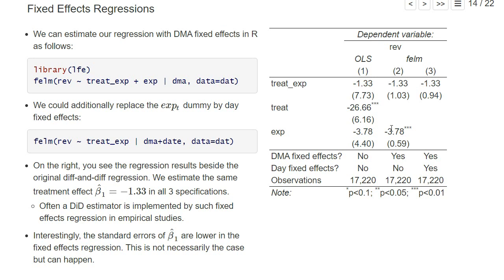Here we still have the dummy for the experimental period, but we could also, instead of having a dummy for being in the experimental period or not, add fixed effects for every day in our data set. Now we have some days in the experimental period, others in the control period, but if we want to control for seasonal patterns, we could just control by a dummy for each day.